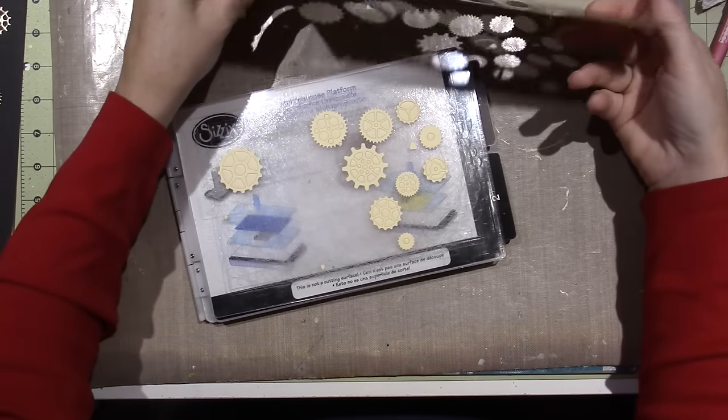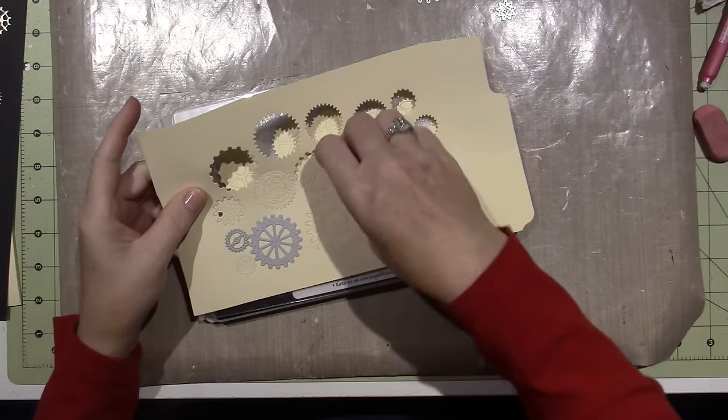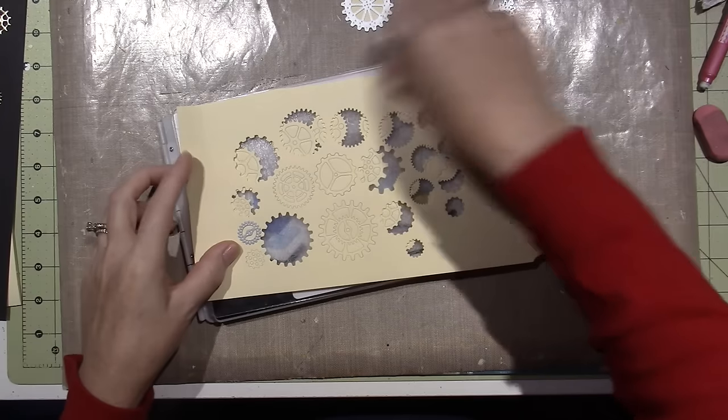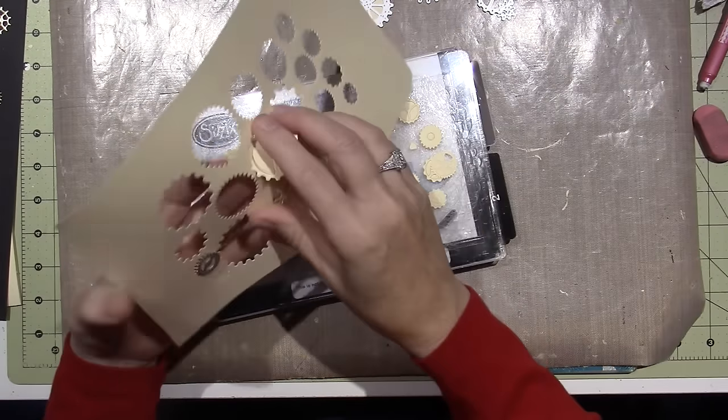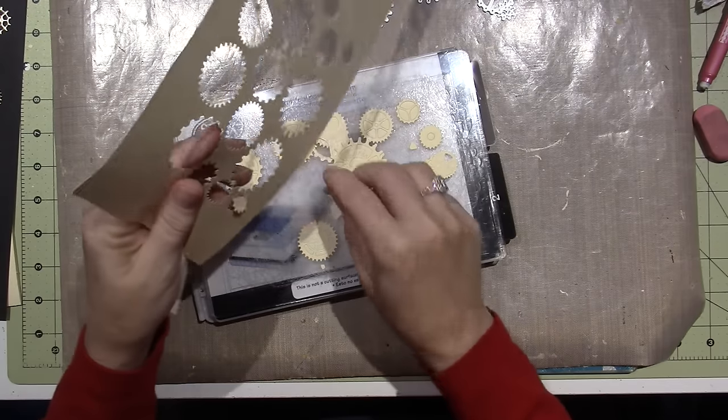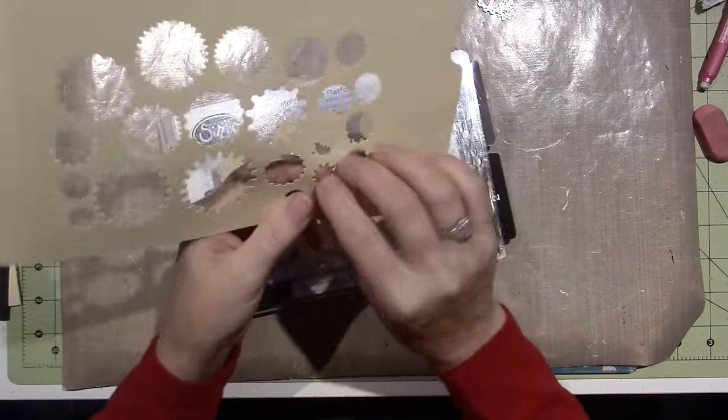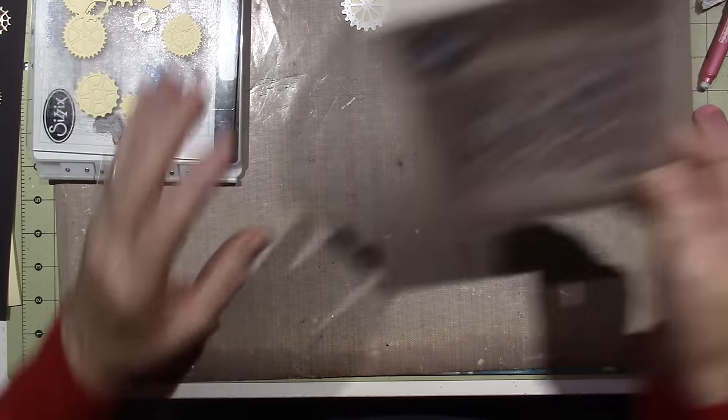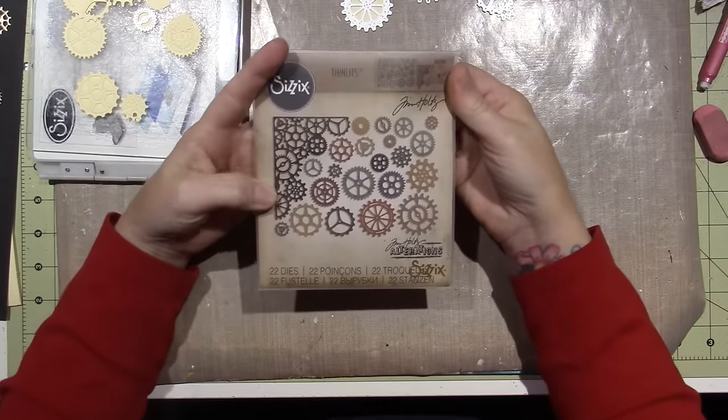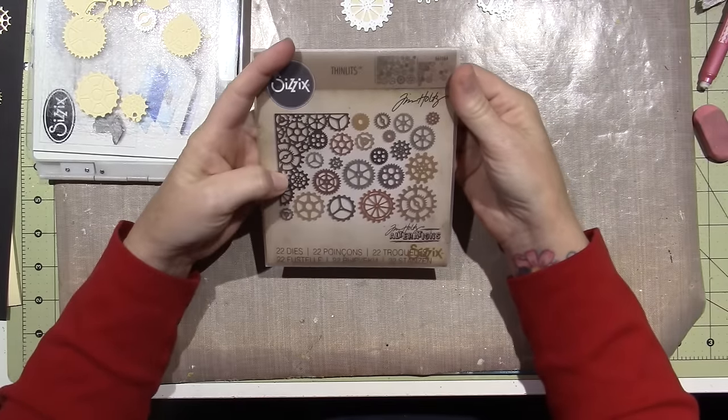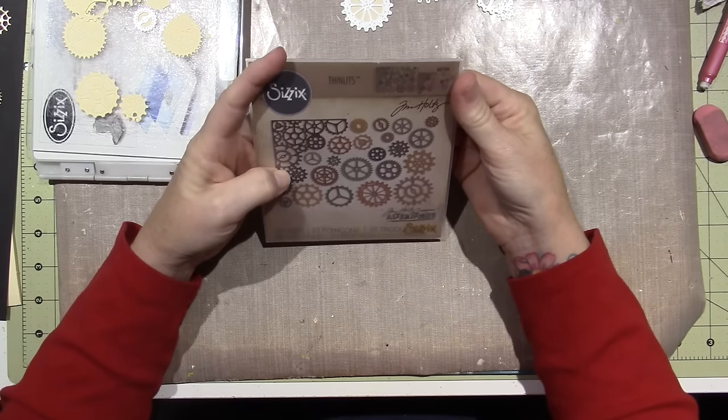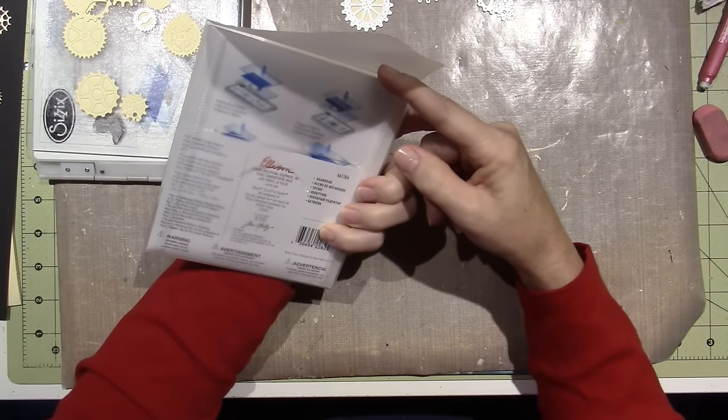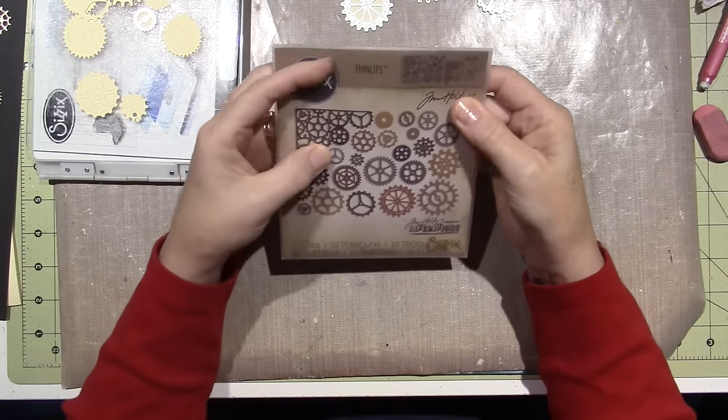So this die is a new die, and I haven't bought dies in a long time. I have lots of them, but this is just a piece of file folder. I tried using the grunge paper, and I couldn't get it to cut. These are thinlets. Let me show you what this is, first of all. I bought this die, a Sizzix die called thinlets, Gearhead. That's the name of it, I think.